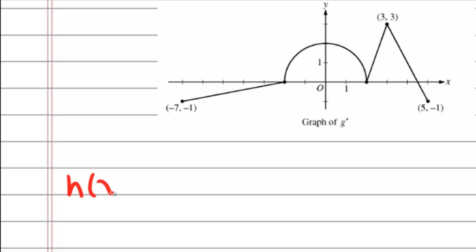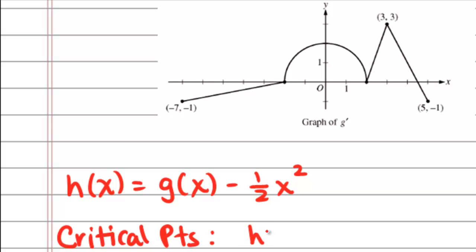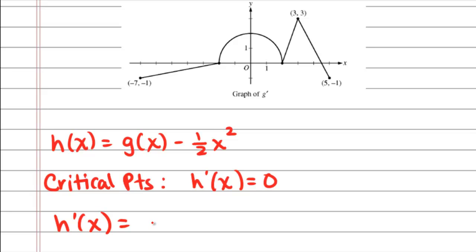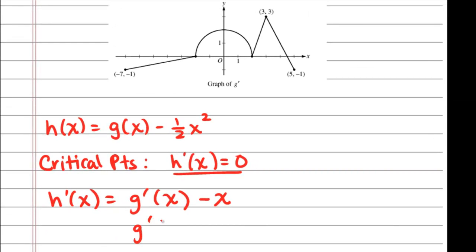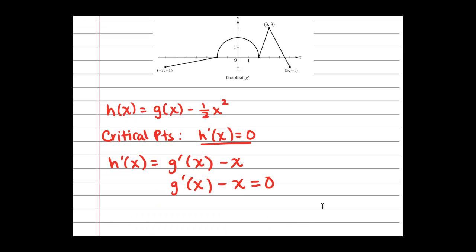So in part C, they give you that h of x is defined as g of x minus one-half x squared. The first piece is that we're looking for information about critical points. And critical points for the function h will occur when either h prime of x is equal to 0 or is undefined. So let's go ahead and find h prime. So h prime of x is equal to g prime of x minus the derivative of one-half x squared, which is x. So we're going to be focusing on where h prime of x is equal to 0. So therefore, set g prime of x minus x equal to 0, and that will occur when g prime of x is equal to x.